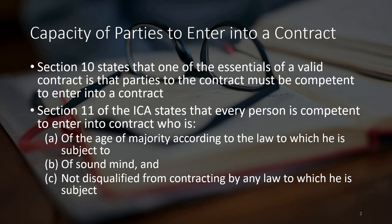Capacity of parties comes from Section 10, which states that a person should be competent to contract. Section 10 talks about valid essentials of a contract, and parties should be capable — that is one essential. Who are the capable parties is defined in Section 11. Section 11 of the Indian Contract Act states that every person is competent to enter into a contract who meets three conditions: first, the age of majority according to the law to which he is subject; second, of sound mind; and third, not disqualified from contracting by any law to which he is subject.